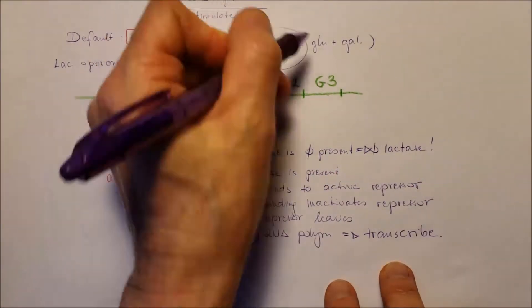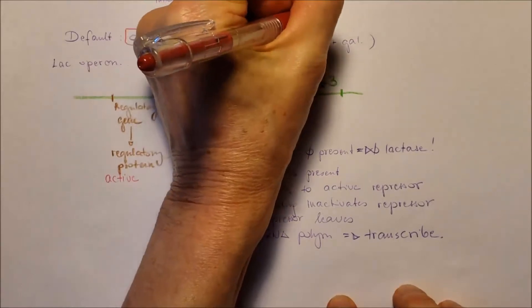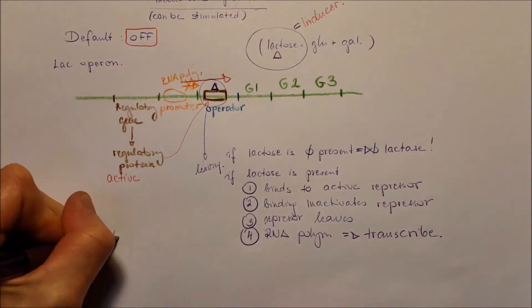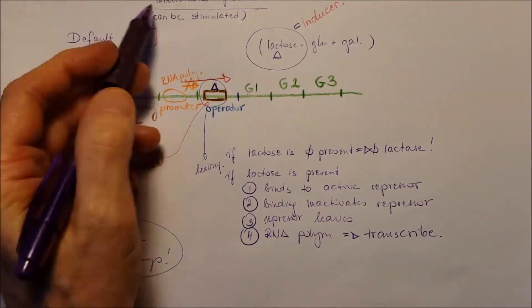So this inducible operon is usually present, so the lactose is the inducer, and it's usually present in catabolic pathways.